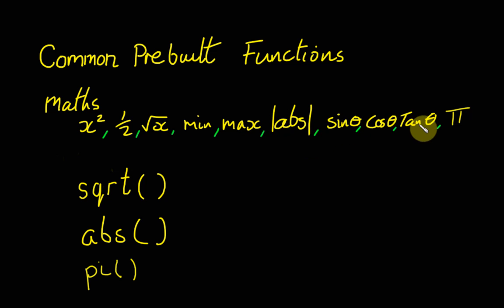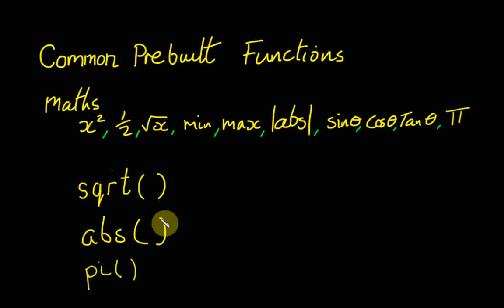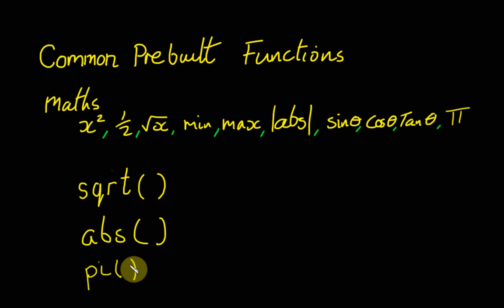We could have sine, cos, tan. Pi we could also do — you can see pi down here. Now, pi is an interesting one. With square root, say I'd have to type in 4, and it would return 2. ABS, say I typed in minus 6, and it would return 6. But with pi, I don't need to type anything in. So that particular function would just run without anything inside the bracket. So these are quite common functions that you would see all over the place.